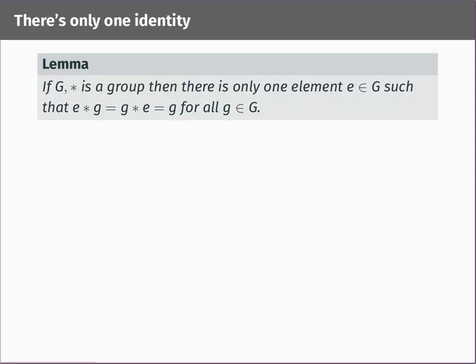The first result, which I mentioned before, is that a group has only one identity element. The lemma says that if G is a group with group operation star, then there is only one element E in G such that E star g and g star E are both equal to g for every little g in big G. Certainly at least one such element exists because the identity axiom says that some such element E exists.